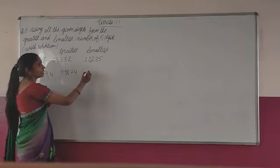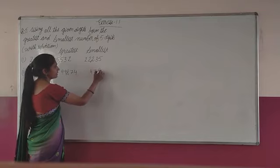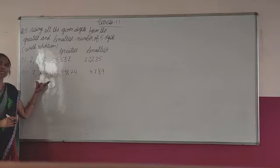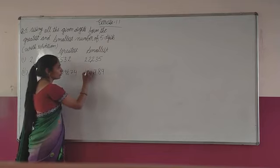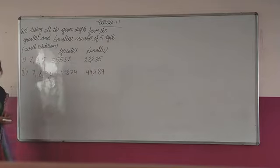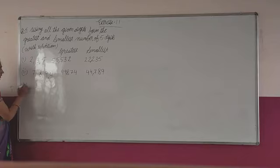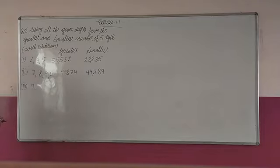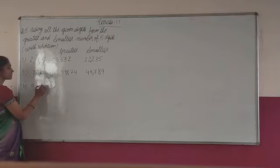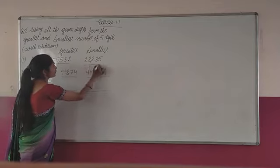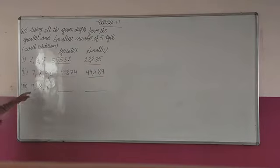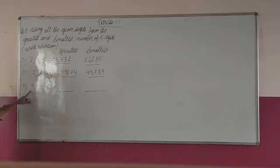Now for the smallest number using 4, 7, 8, 9 — it would be 47,89, and the smallest digit 4 gets repeated. The third part is similar — you have to try that yourself.